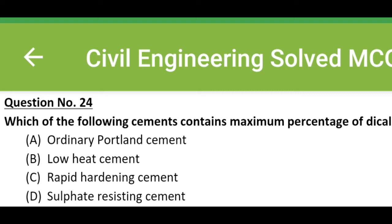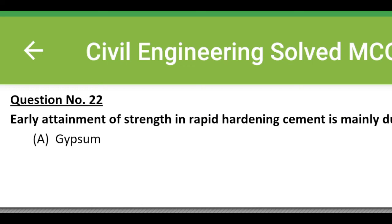Option C, rapid hardening cement. Option D, sulfate resisting cement. The correct answer is option B, low heat cement. Early attainment of strength in rapid hardening cement is mainly due to: Option A, gypsum. Option B, finer grinding.